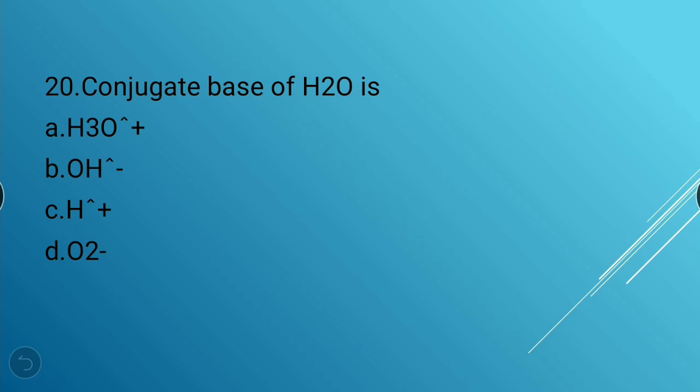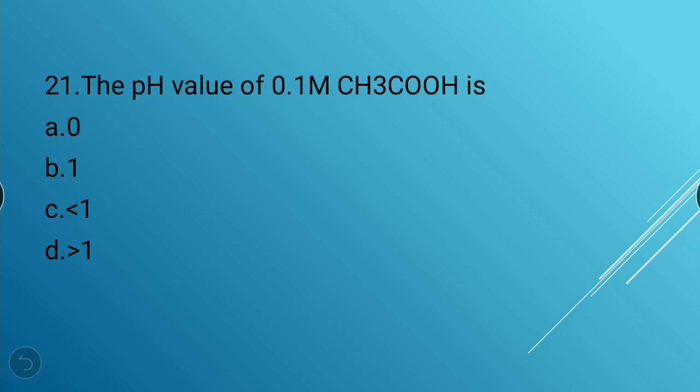Next question: The conjugate base of H₂O is OH⁻. Following question: The pH value of 0.1 molar CH₃COOH (acetic acid) — since acetic acid is a weak acid, pH is always greater than 1.